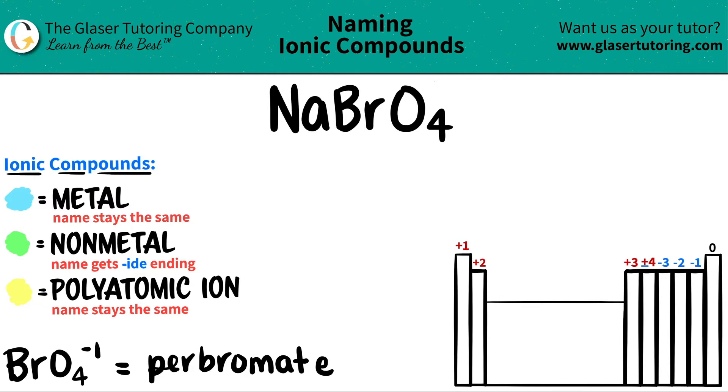In this case we have three elements. We have sodium, which is Na; we have bromine, which is Br; and we have O for oxygen.